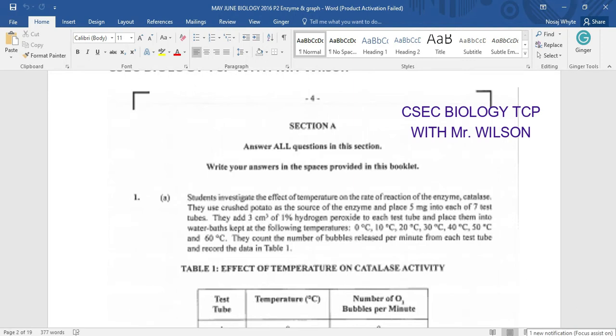Section A, answer all questions in this section. Write your answer in the space provided in this booklet. Now students investigate the effect of temperature on the rate of reaction. So this is pretty much the aim for this particular lab. Students are supposed to investigate the effect of temperature on the rate of reaction of enzymes and a particular enzyme here is catalase. They use crushed potato as the source of enzyme and they place five milligrams into each of seven test tubes. Then they added three centimeter cube of one percent hydrogen peroxide to each test tube and place them into water bath kept at the following temperatures.